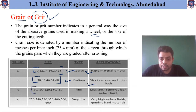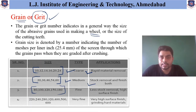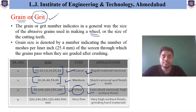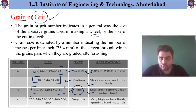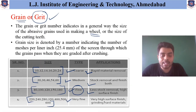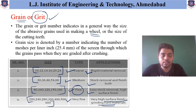If the size is 80, 100, 120, 150, or 180, it is called fine grain, used for less stock removal and high surface finish — meaning these particles are for finishing purpose only and material removal is very less. If the grain size is more than 220 up to 600, those grains are called very fine grains, specifically used for high surface finish and also for grinding hard materials.